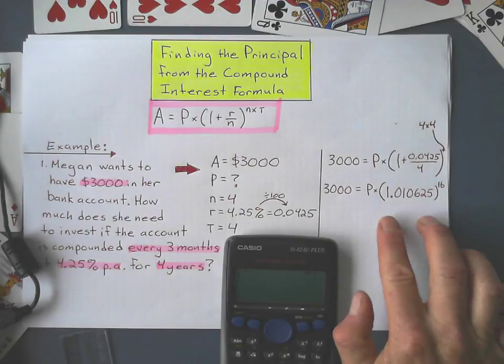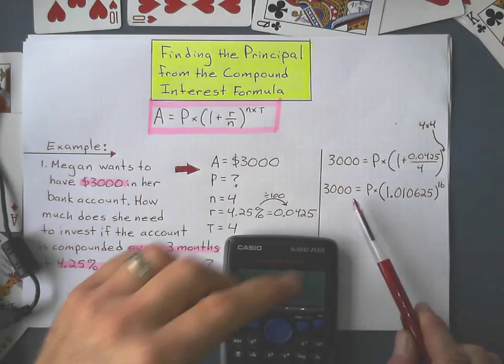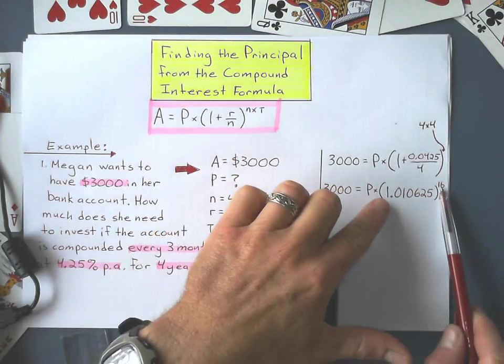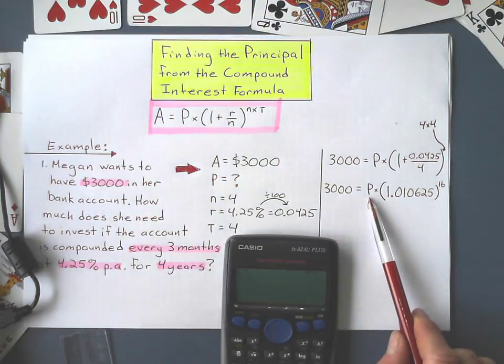Alright? So now, what we have here is, we're figuring out the principle, which is the original amount. So in order to figure out this principle here, I need to divide the new amount by all of this, and that will give me my original amount, otherwise, in this case, known as the principle.